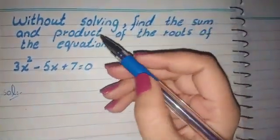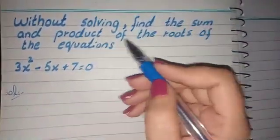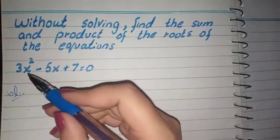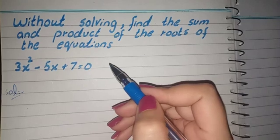Welcome to my class channel. This video is the topic of without solving, find the sum and product of the roots of the equation. Our equation is 3x² minus 5x plus 7 equals to 0.